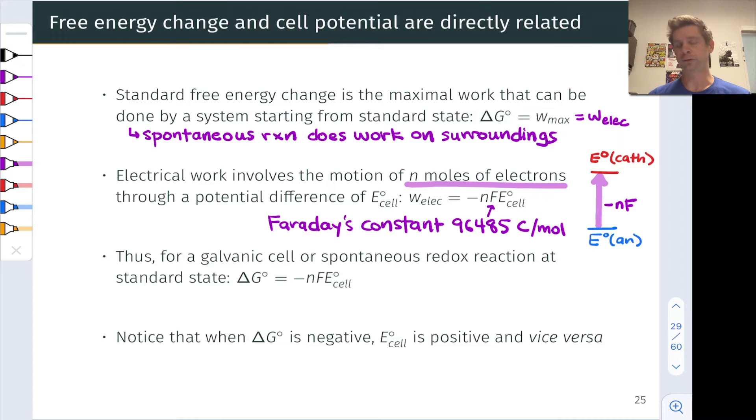And so the energy associated with this is the magnitude of the charge that moves, Faraday's constant times n with the negative sign because electrons are negatively charged, times the potential difference, which is E° for the cathode minus E° for the anode. And so for a galvanic cell or spontaneous redox reaction at standard state, ΔG° is equal to -nFE°_cell.